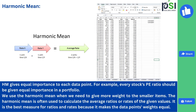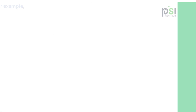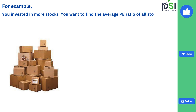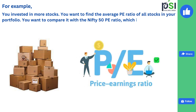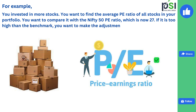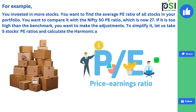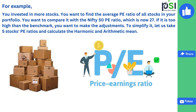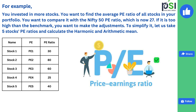For example, every stock's PE ratio should be given equal importance in a portfolio. If you are calculating the average PE ratio of your portfolio and want to compare it with the Nifty 50 PE ratio — which is around 27 — you can use harmonic mean. If your portfolio PE ratio is too high or too low, you want to do some adjustments. We can calculate the average PE ratio of all stocks using harmonic mean and compare with arithmetic mean. To simplify, let us take 5 stocks' PE ratios and calculate both.